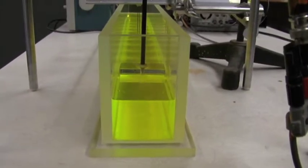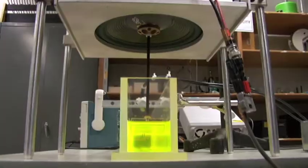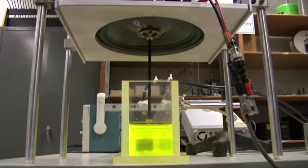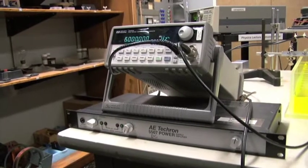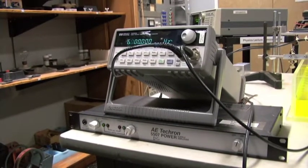The wave maker is a wedge that's attached to a simple loudspeaker and the loudspeaker is being driven at 6 hertz. We use a function generator and an amplifier to drive the wave maker.